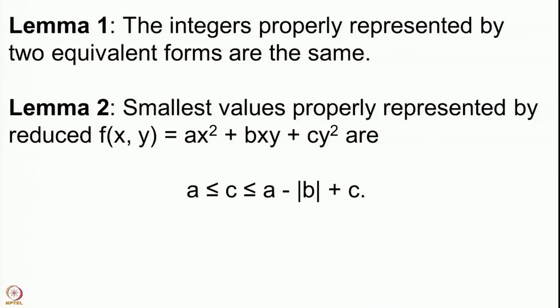The second statement that we had was the following. This is also very important. Here we start with our form being a reduced form. Remember: reduced form means that a is less than or equal to c, and further b is between minus a and a. In some sense this is the simplest one among the equivalence class of the forms. If you take all binary forms equivalent to f, then f will be the simplest in some sense because its coefficients are the smallest possible.